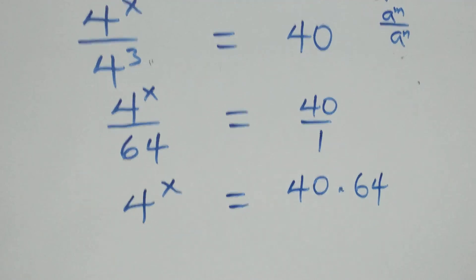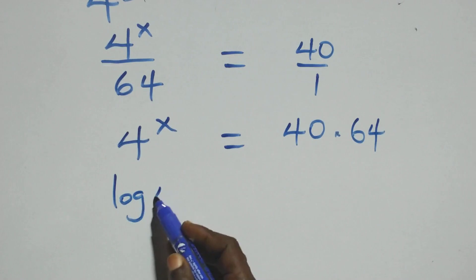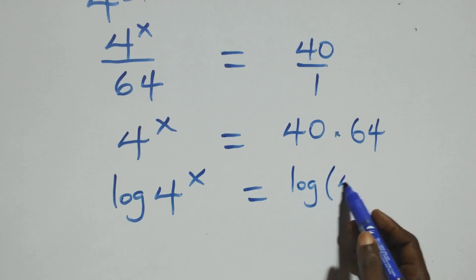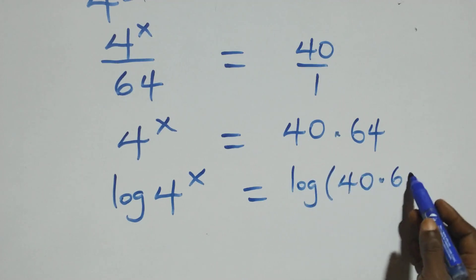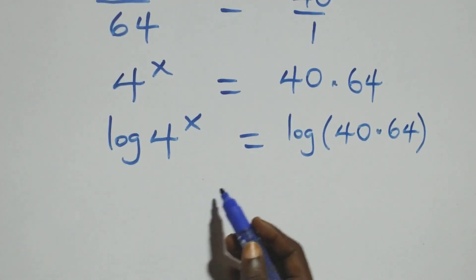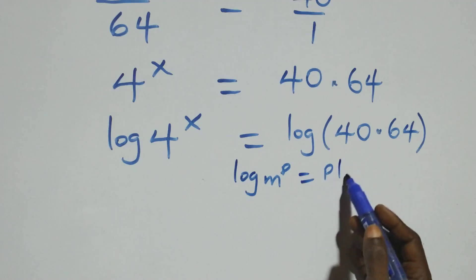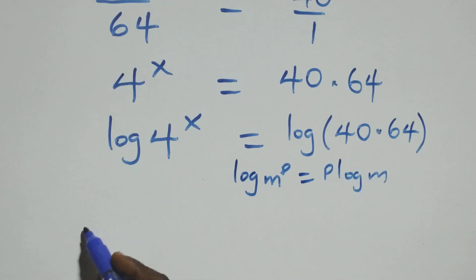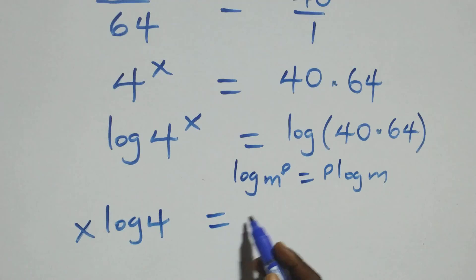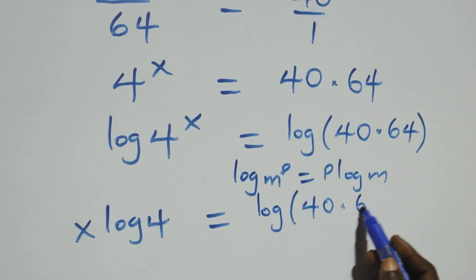At this point we take the log on both sides. We have log of 4 raised to power x equals log of 40 times 64. We apply the log power rule: when we have log m raised to power p, this is the same thing as p log m. So this becomes x log 4 equals log of 40 times 64.